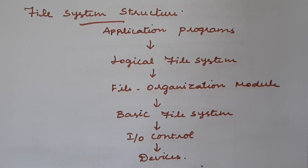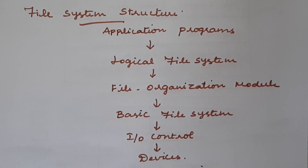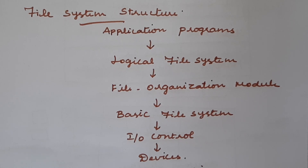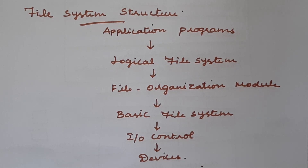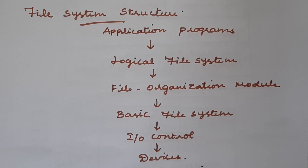This layered structure of the file system minimizes duplication of code, though it does not completely eliminate it. Since many different file systems may be maintained, each will have its own logical file system and file organization module. However, a disadvantage is that the operating system must decide how many layers to use and what each layer will do, which can be a major challenging task when designing new file systems. This concludes the discussion on file system structure.